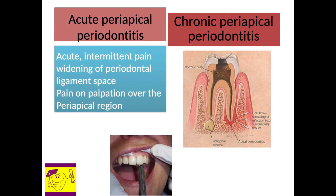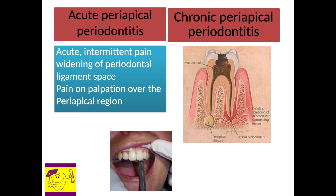Once the inflammation and infection crosses the apical foramen and involves the surrounding periapical region, it is called periapical periodontitis. In acute periapical periodontitis, there is pain on probing, tenderness on percussion of the tooth, and palpation over the alveolar mucosa. The tooth is slightly extruded from the socket with accompanying regional lymphadenitis. Radiograph shows radiolucency involving the pulp along with widening of the periodontal ligament space.